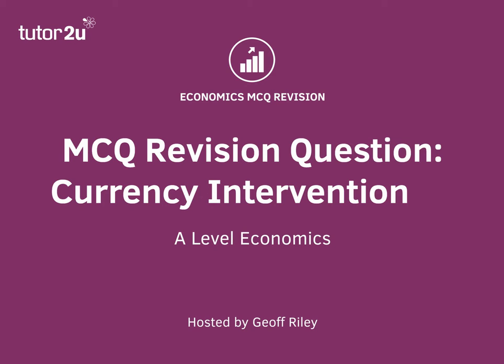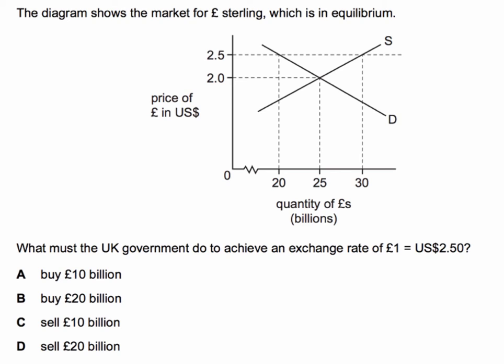In this question we're going to take a look at a macro topic: intervention in the currency market. The diagram shows the market for sterling pounds, which is currently in equilibrium at a price of two US dollars to the pound with 25 billion pounds traded. What must the UK government do to achieve an exchange rate of one pound buying two dollars fifty?